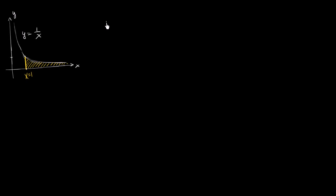So we could set this up as an improper integral going from 1 to infinity of 1 over x dx. Well, once again, we can view this as the limit. Let me do that same yellow color. We can view this as the limit as n approaches infinity of the integral from 1 to n of 1 over x dx.